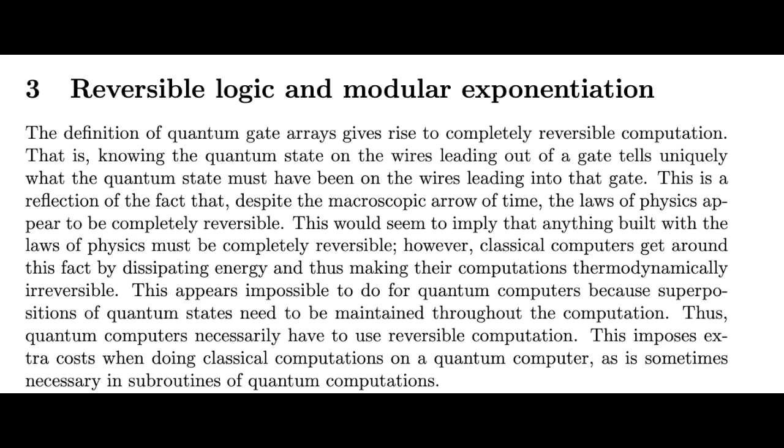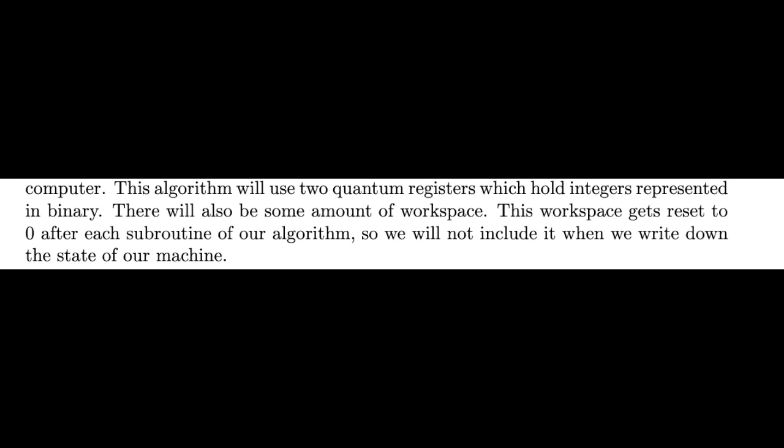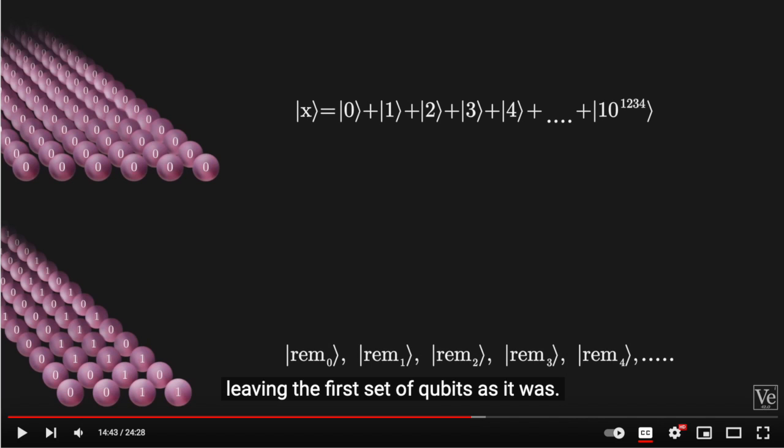And while Peter Shor does not get philosophical in his paper, he notes numerous times how important reversible computing is, the word reversible appearing 36 times in his 28-page paper, but not once in the Veritasium video. Peter Shor also refers to the qubits used to reverse the operation as a workspace and notes the algorithm will use two quantum registers which hold integers represented in binary. There will also be some amount of workspace. This workspace gets reset to zero after each subroutine, so we will not include it when we write down the state of our machine. Unfortunately, Veritasium uses two registers to compute what he refers to as modular exponentiation, not realizing that Shor actually uses three registers and left the workspace out of the description. From that point forward in the video, everything is wrong.